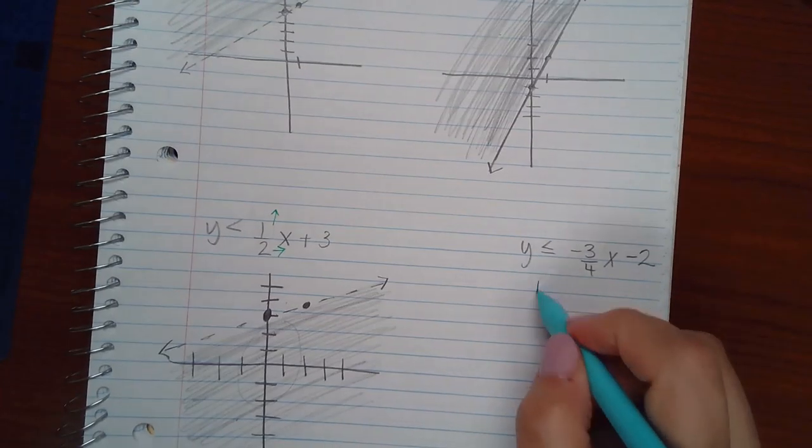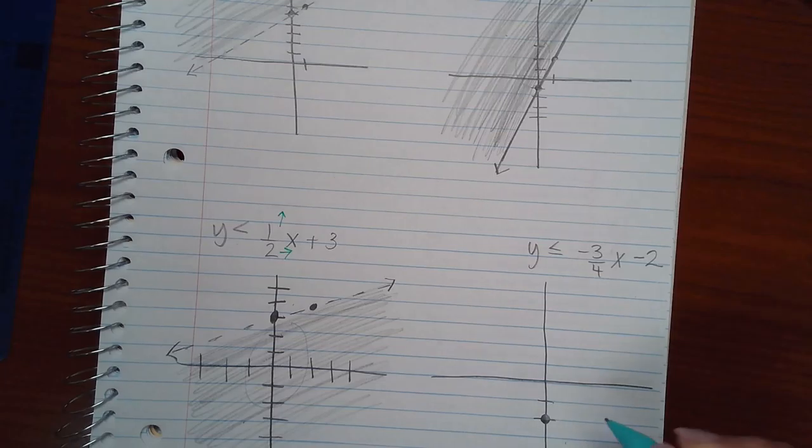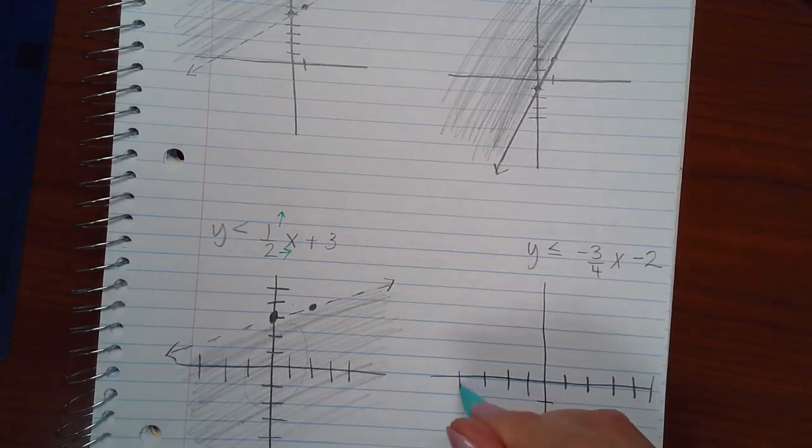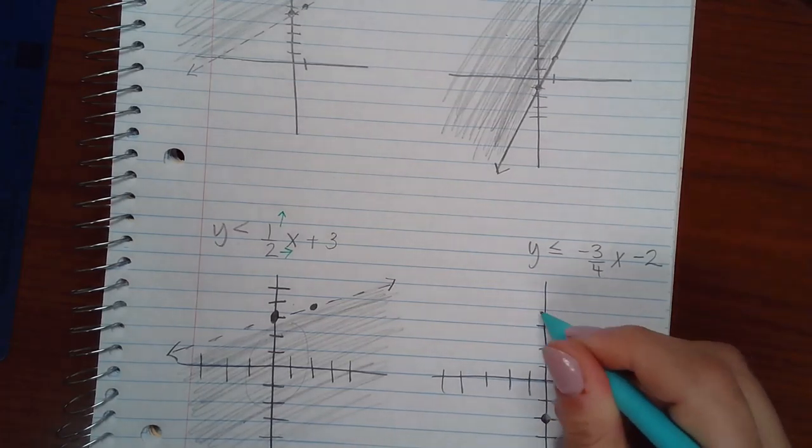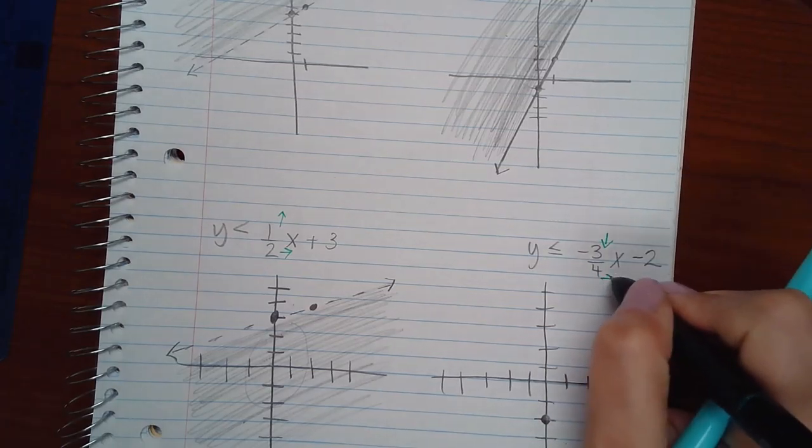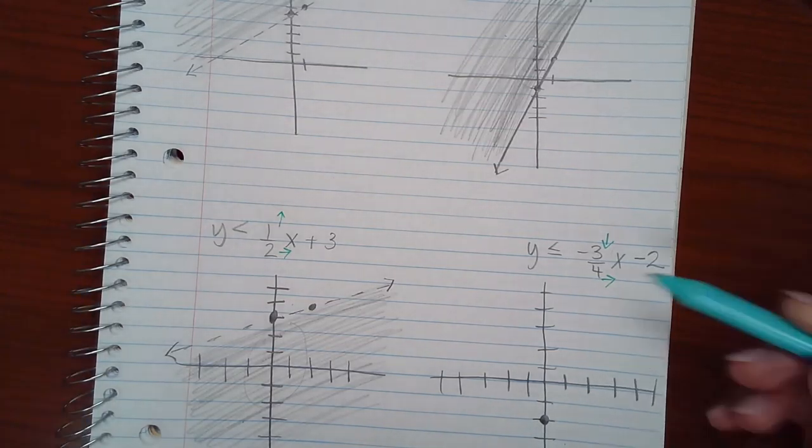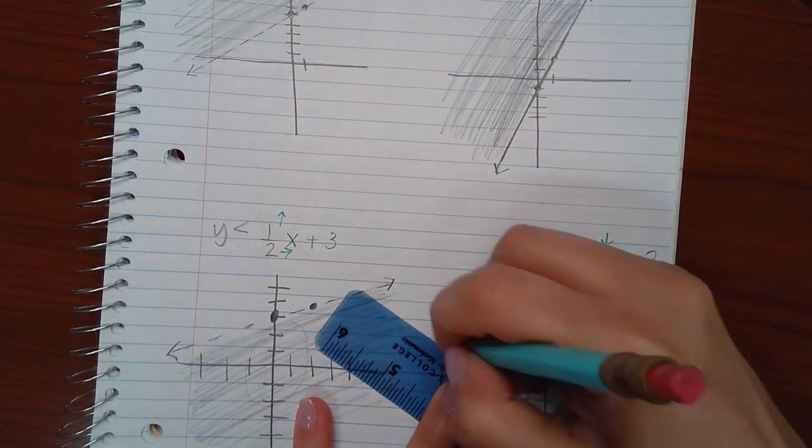Let's move on to the very last one. Here, my y-intercept is negative 2. And then here's my slope. So I'm going to be going down 3 and over to the right 4. So 1, 2, 3, and over 1, 2, 3, 4. And this does have an equal bar on it. So I will be drawing a solid line.